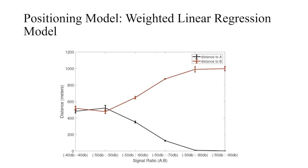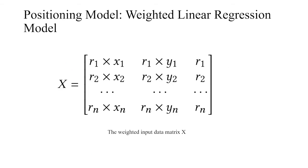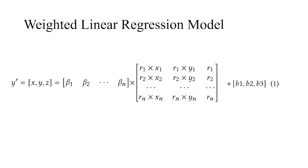The first positional model we choose is weighted linear regression model. This figure shows RSSI has a very big impact on the final location result, so we use RSSI to weight the coordinates as input. The model input is shown here - every coordinate will multiply the RSSI value. So we get the input data matrix, and the final weighted linear regression model as shown here. We can have n betas multiply this input matrix and add three biases and get the final output.